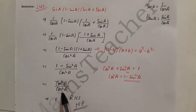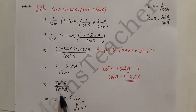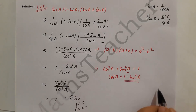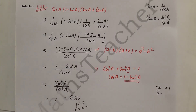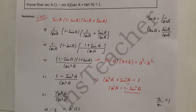Cos squared a over cos squared a cancels to give 1. I hope this was a very easy question and you understand it. If there is any doubt please comment in the comment box. Thank you.